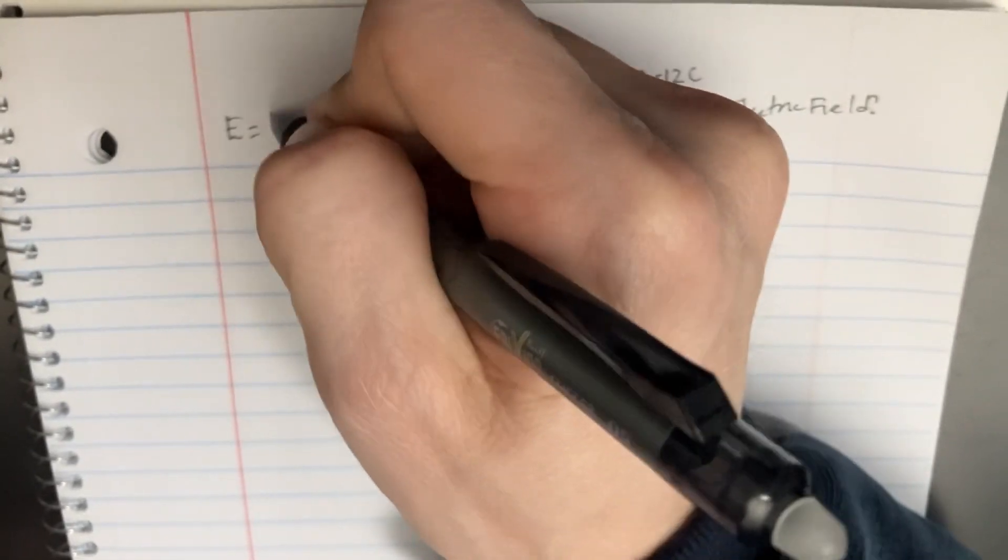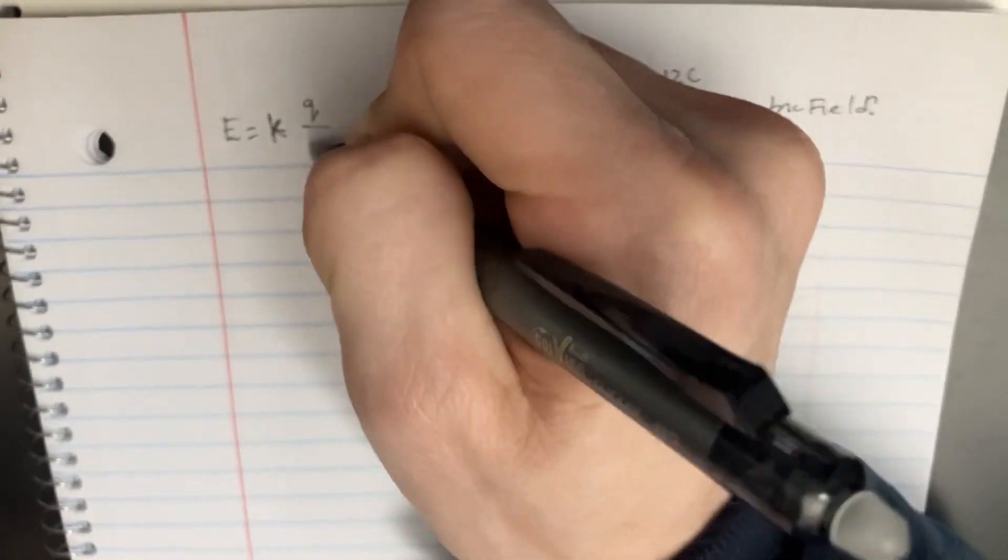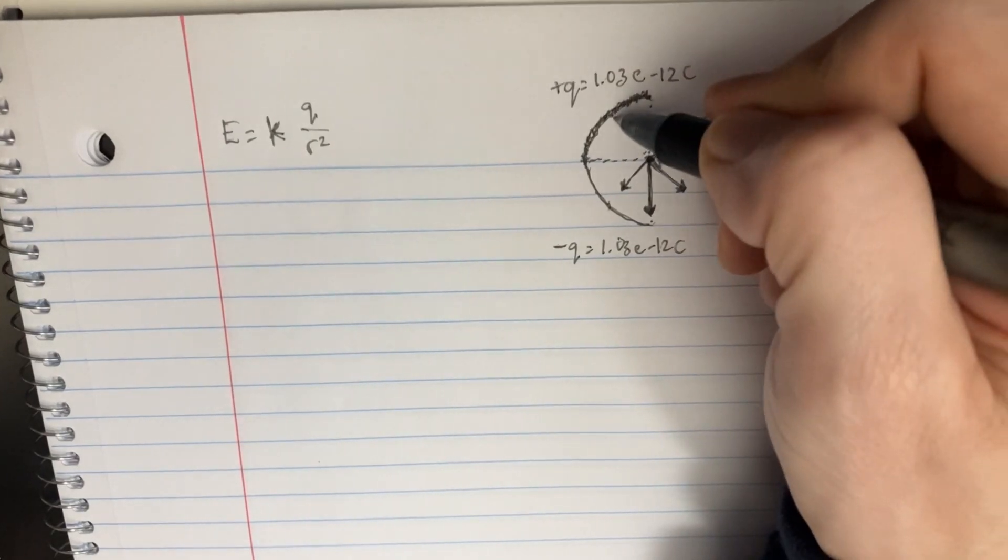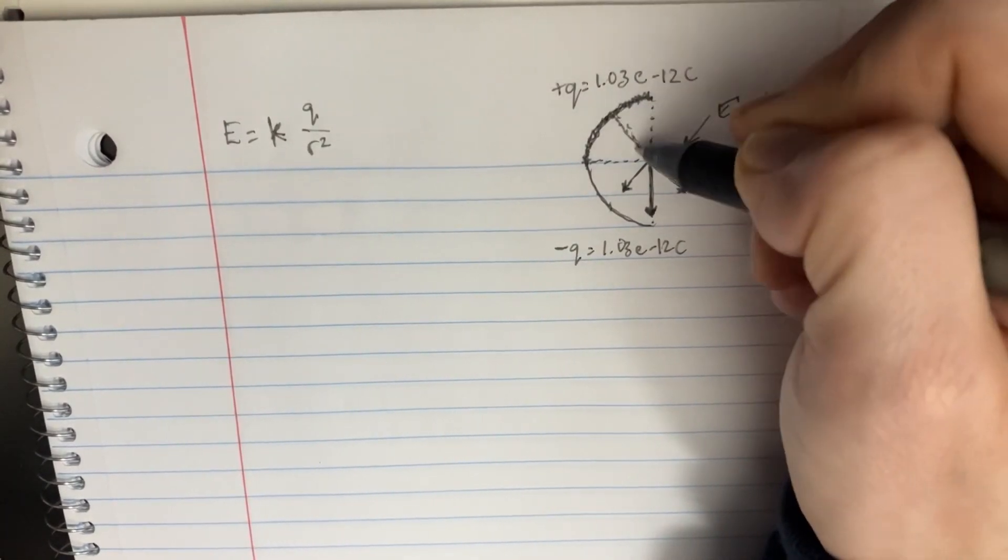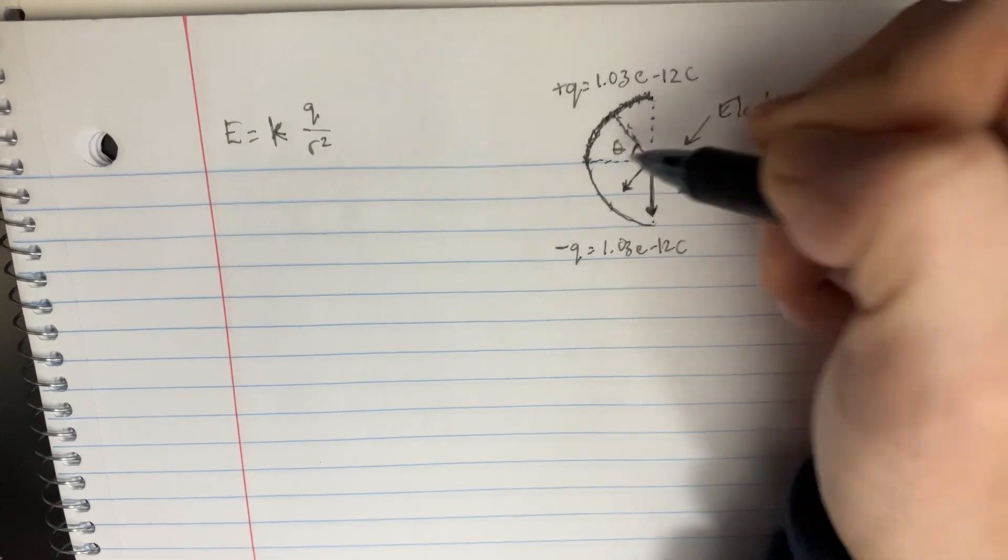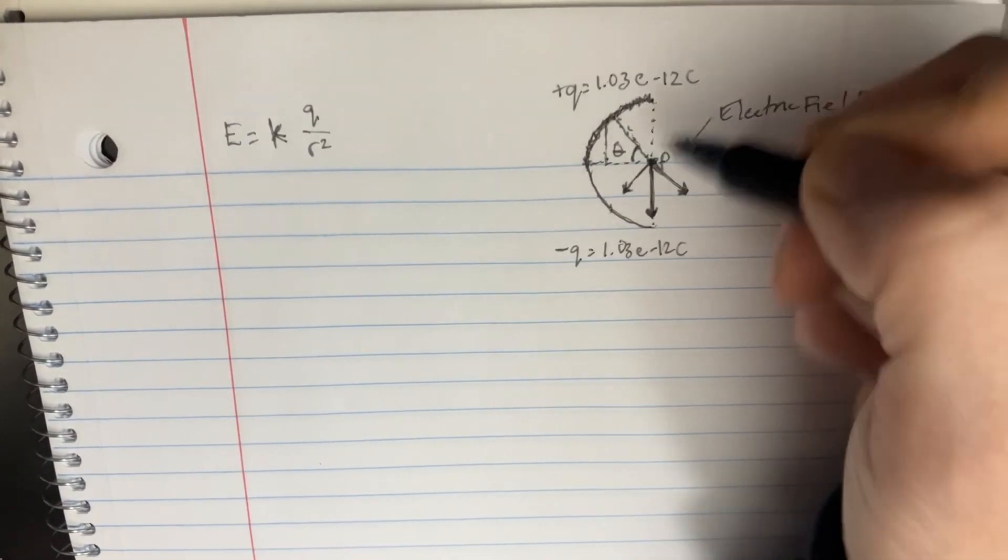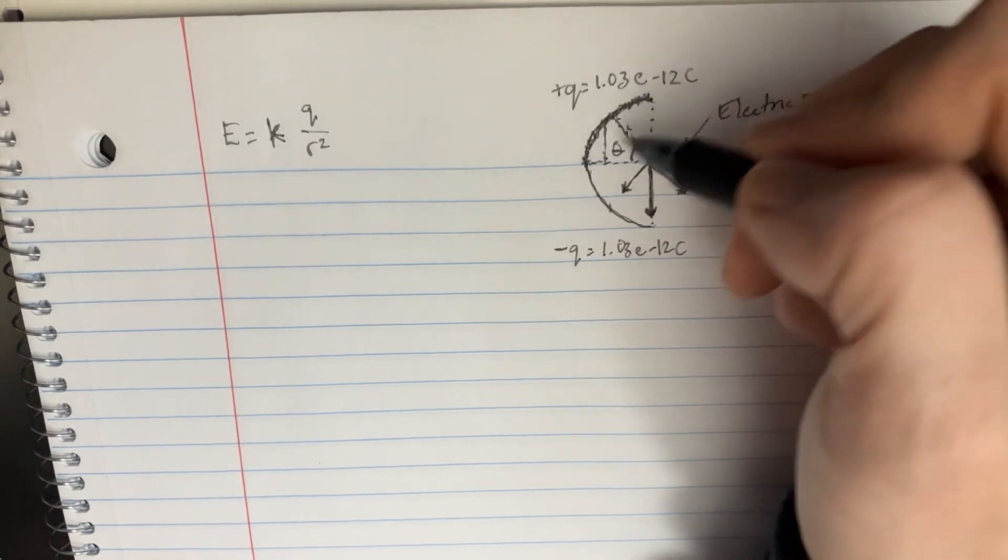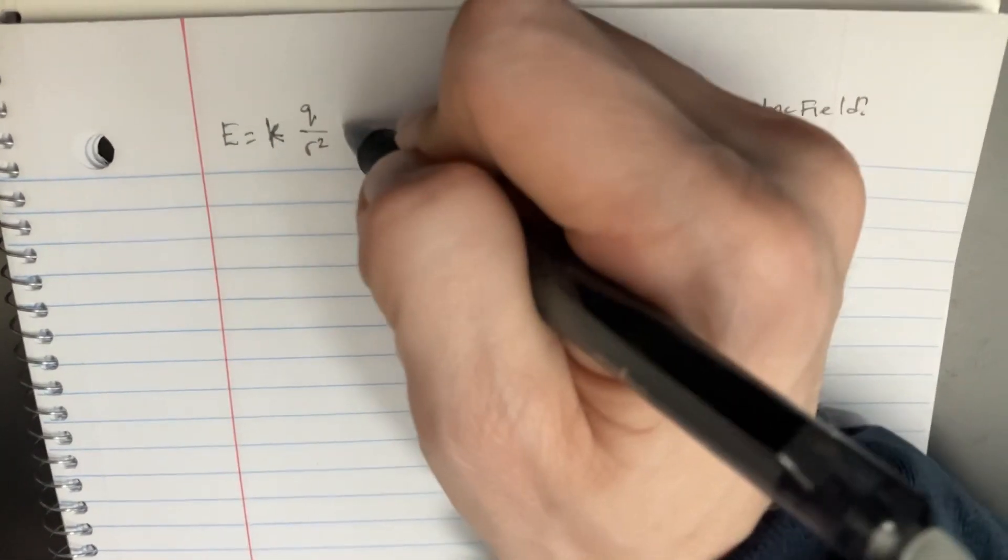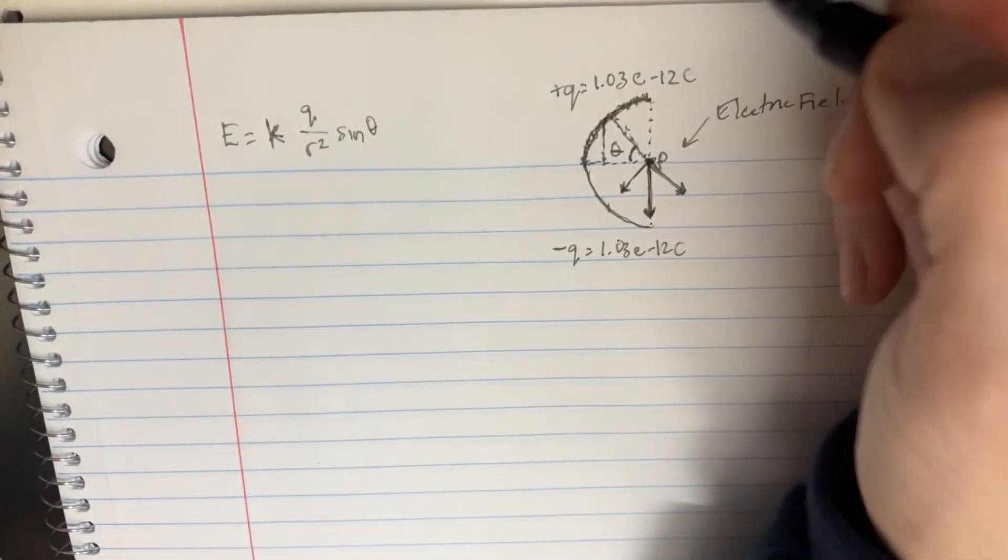So let's see if we can write the equation out first. K Q over R squared. But let's realize, let's try to define some kind of angle. We're going to define this angle in this particular case. We're going to know that the component that we're looking for is in this direction, so it's opposite. And SOHCAHTOA is opposite sine, so it's going to be this one right here.